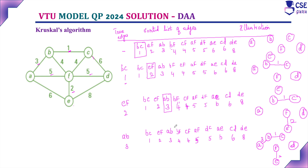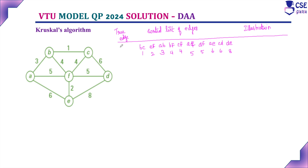Next, consider edge BF with weight 4. Check whether the inclusion of this edge forms a cycle — it does not form any cycle. So we can include edge BF with weight 4. The graph now includes BC with weight 1, EF with weight 2, AB with weight 3, and BF with weight 4.